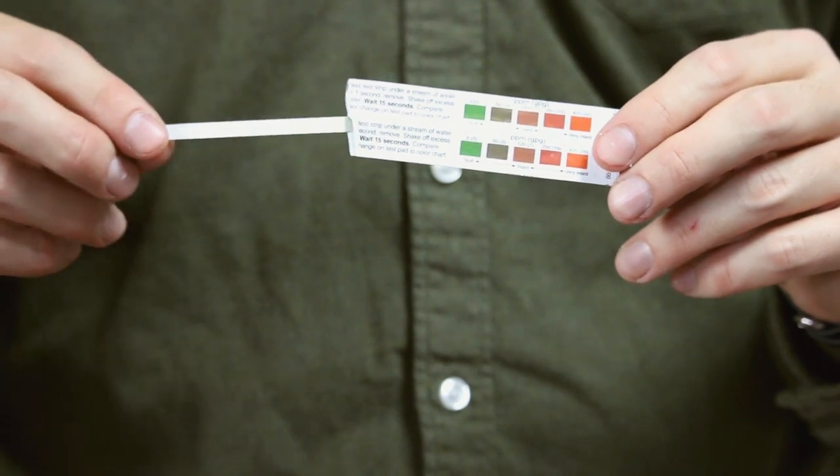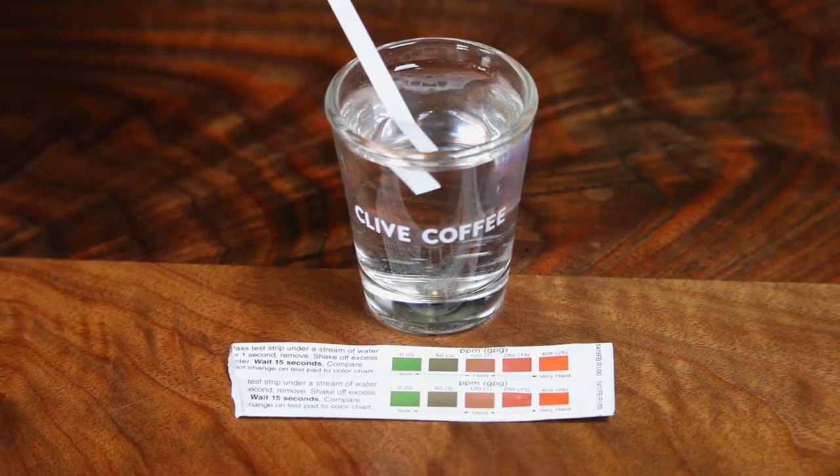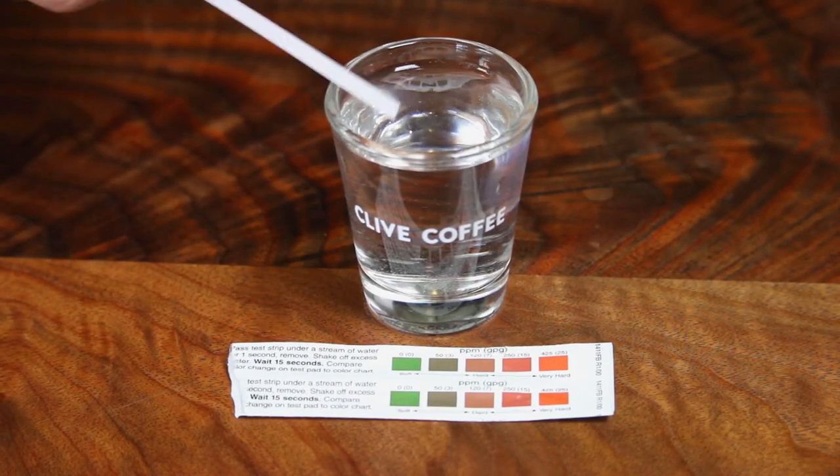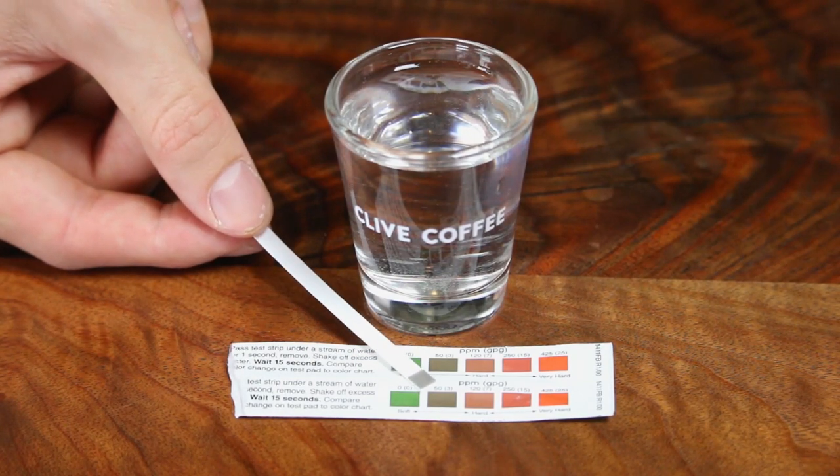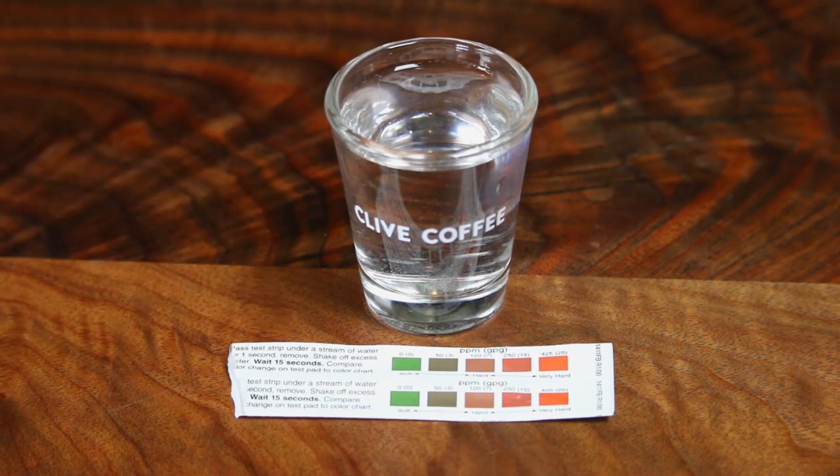Before introducing any water to the machine, it's important to test it to make sure the water is adequately soft. Use the included water test strip to verify the softness of your water. Ideally, we're looking for a softness near 50 parts per million. For more information on water, take a look at clivecoffee.com/water or use the link in the description below.